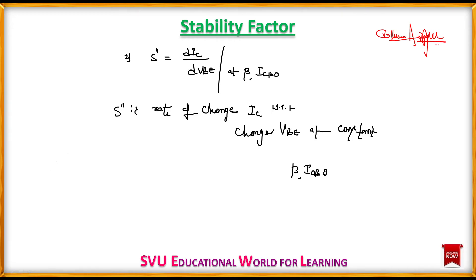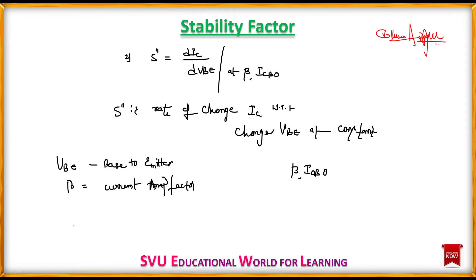To summarize the terminology: VBE is the base-to-emitter voltage. Beta is the current amplification factor of the transistor. ICBO is the collector-to-base leakage current.